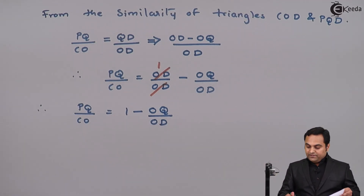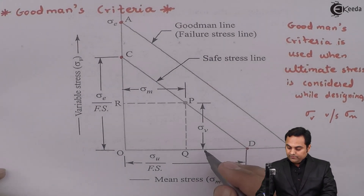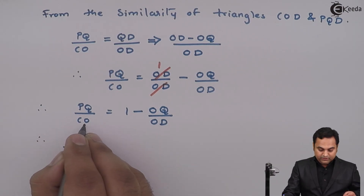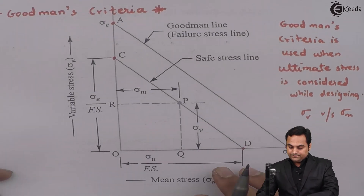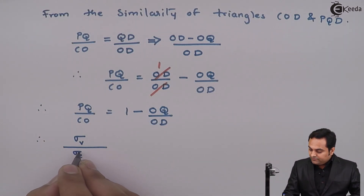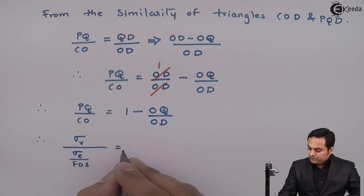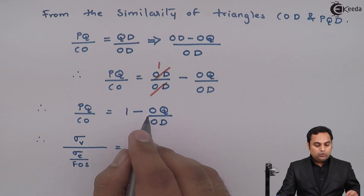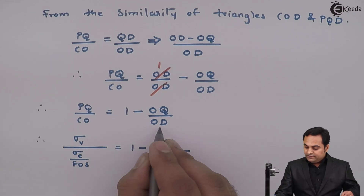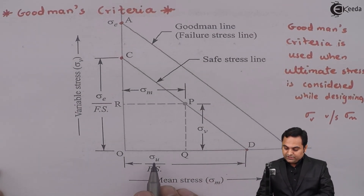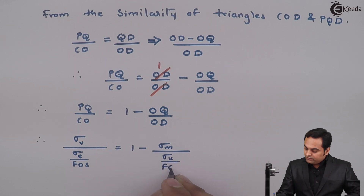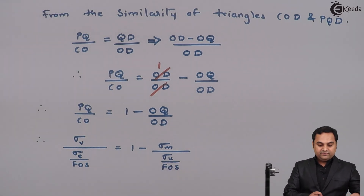PQ is the variable stress Sigma V, and CO is Sigma E upon factor of safety (the endurance stress divided by factor of safety). OQ equals Sigma M (mean stress), and OD equals Sigma U upon FS (ultimate stress divided by factor of safety). Substituting, Sigma V upon (Sigma E / FOS) equals 1 minus Sigma M upon (Sigma U / FOS).